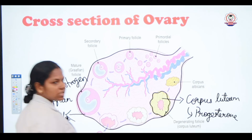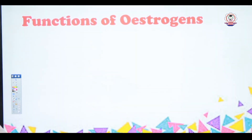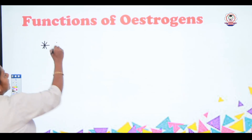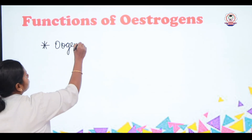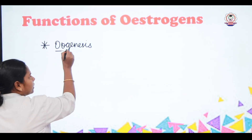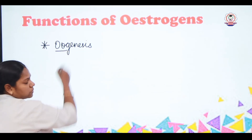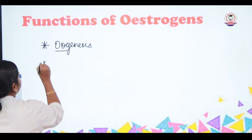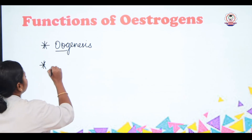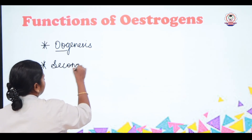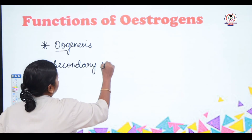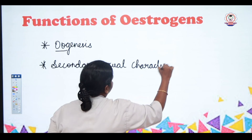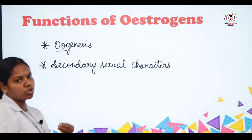The first important function of estrogen is that it is responsible for oogenesis — 'oo' refers to the egg and genesis means formation — so it is responsible for the formation of the egg. The second important function of estrogen is that it is responsible for the development of secondary sexual characters in females, such as breast development and high-pitched voice.